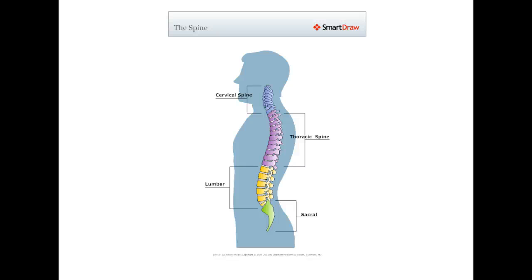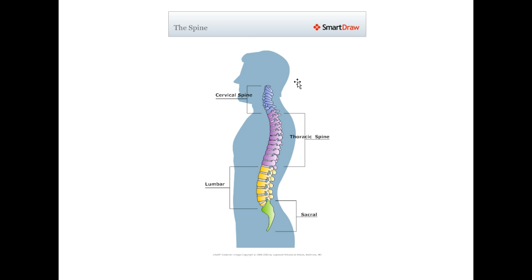Understand your back. This is your spine. First of all, there is the cervical spine. This takes the weight of your head and allows a lot of movement, such as when you're looking up to the sky, looking down, or turning your neck like when you're driving in the car.